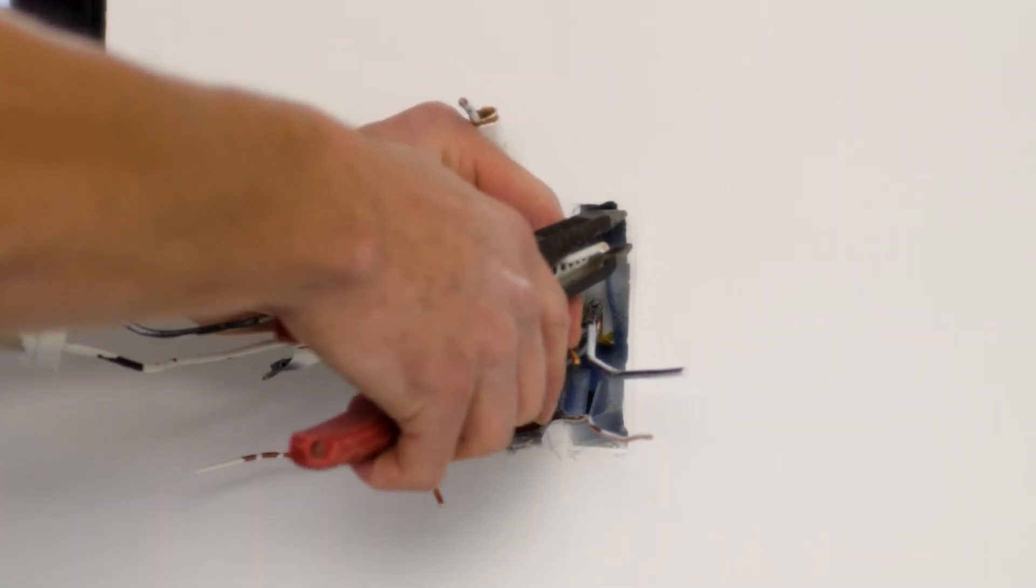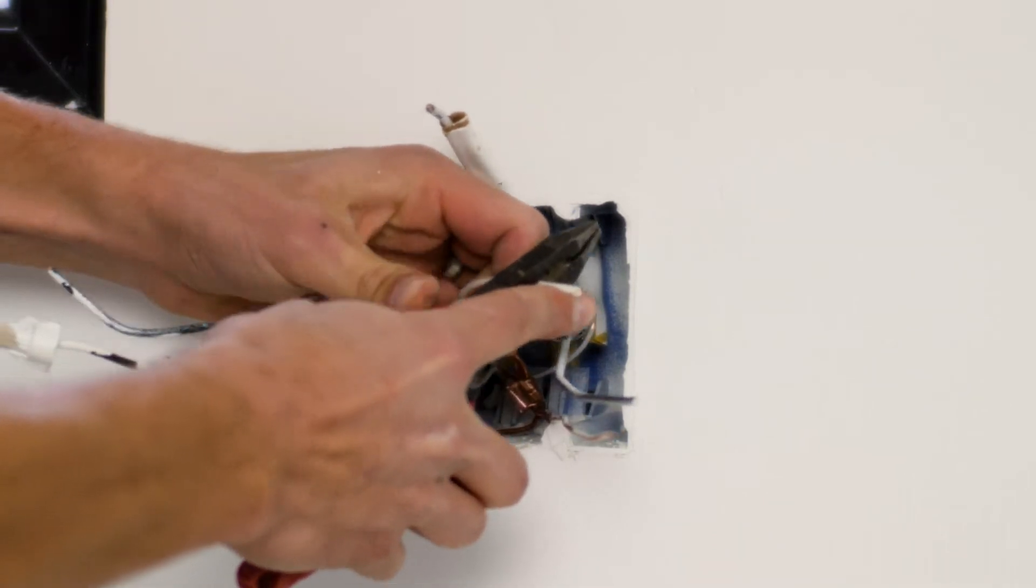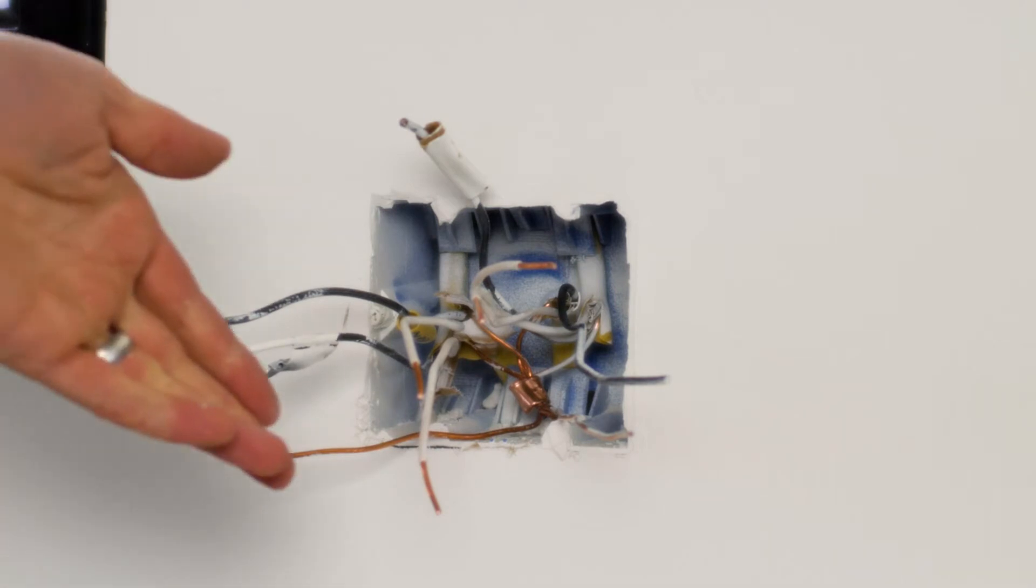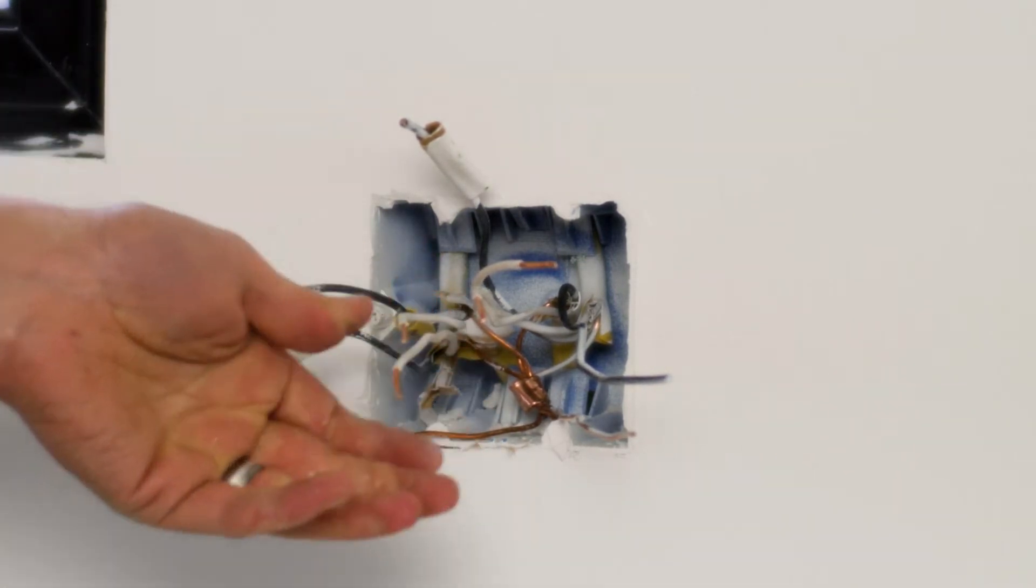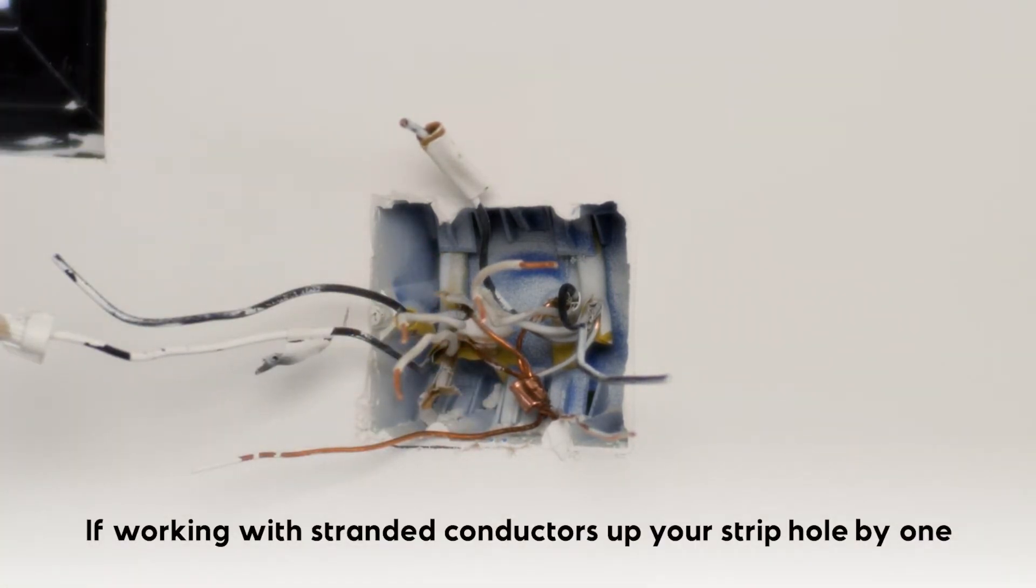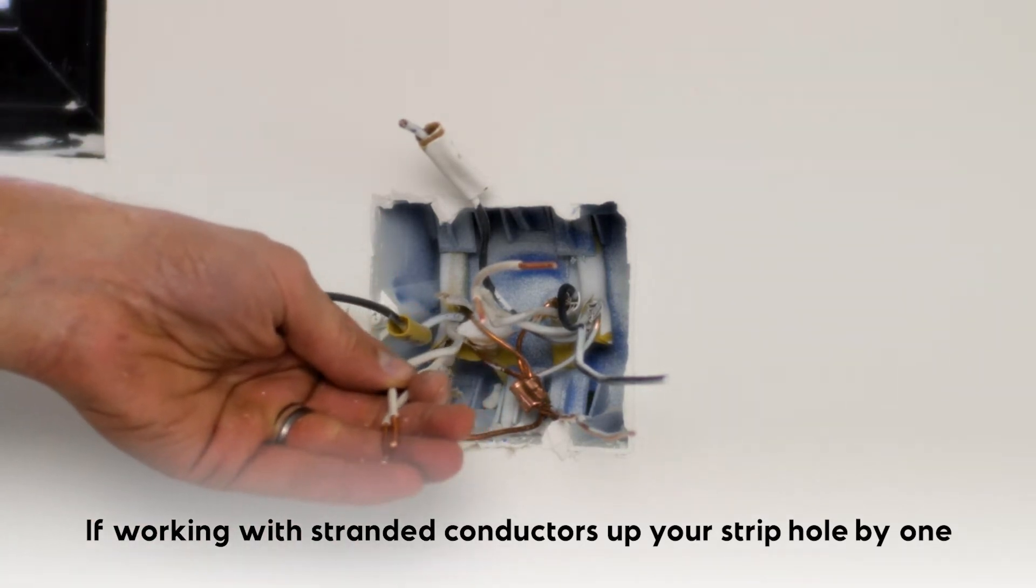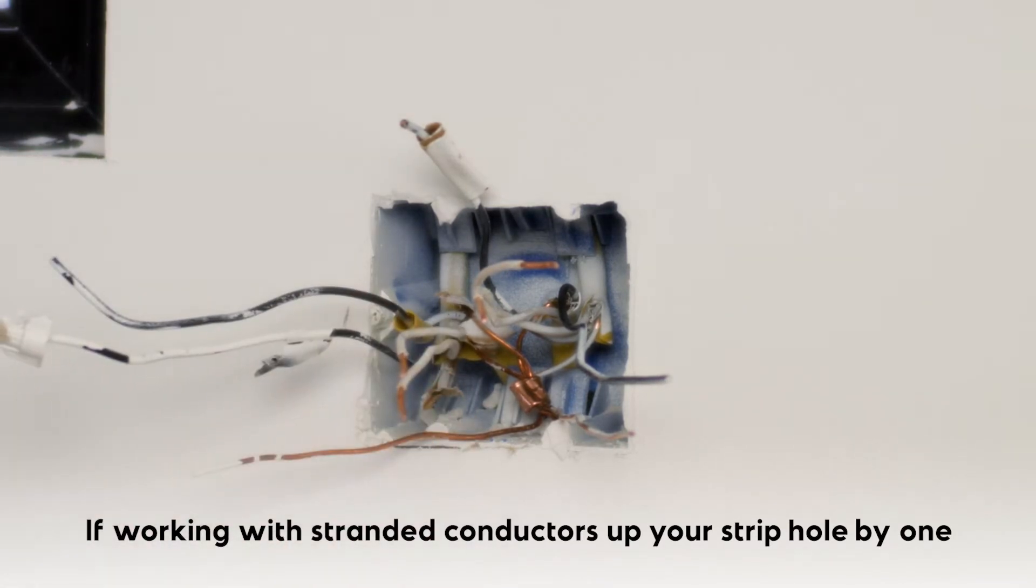It's unlikely in a residence, but in a lot of other circumstances it's quite possible that you'd be working with stranded conductors. In that case, you want to upsize your strip hole by one. For instance, when I'm using number 12 solid, I'm using the number 12 strip hole. But if I'm using number 12 stranded, I'm going to be using my number 10, next size up strip hole based on wire gauge.